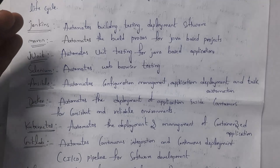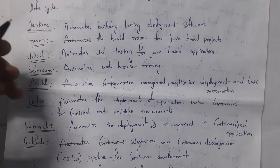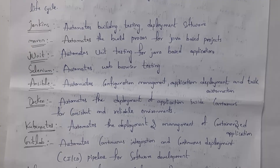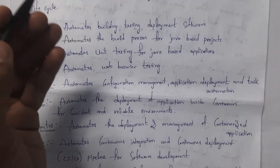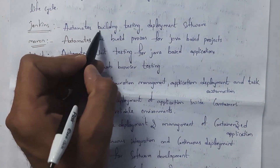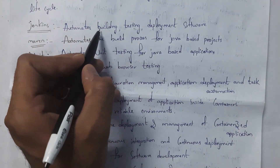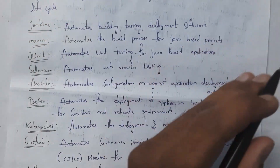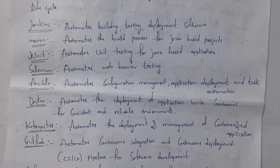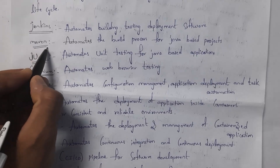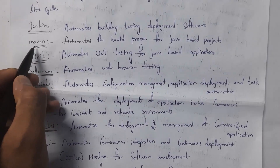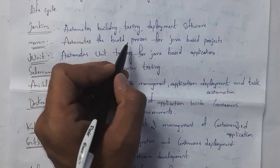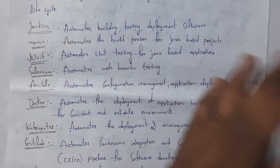These are various automation tools used in DevOps. The first one is Jenkins. Whenever a developer writes any new code, that code is automatically built — build meaning compiling and executing. So building, testing, and deployment — the complete work is automated by using Jenkins. And by using a tool like Maven, we automate the build process for Java-based projects.